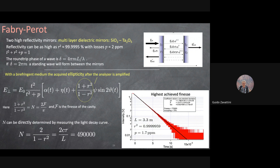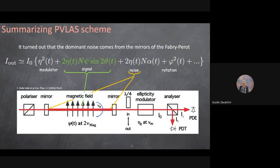After many years of operation, we found that the dominant source of noise was the mirrors themselves — specifically their reflective coatings. This is what ultimately made us stop the experiment, because we couldn't find a solution. Nonetheless, let me show some pictures: the two rotating magnets, the laser entering from the back, the first polarizer, the two cavity mirrors, and the detection system. Light bounces back and forth through a glass tube in 10⁻⁸ mbar vacuum — about 10⁻¹¹ atmospheres.